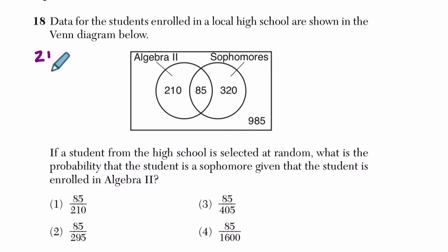There are 210 who are in algebra, but not a sophomore. There are 320 who are sophomores, but not in algebra 2, and there are 85 that are in both, right? So if we add these numbers up, we're going to get everyone who is in algebra 2 or a sophomore.